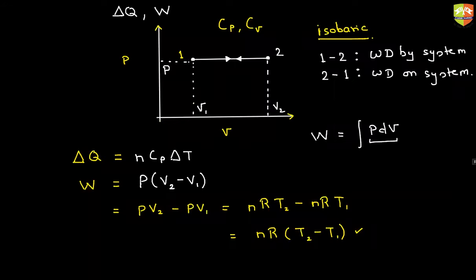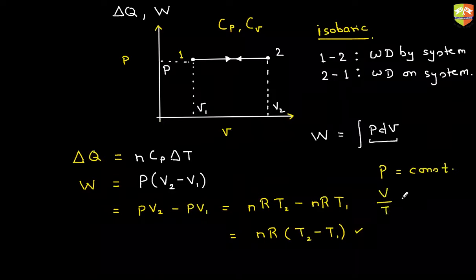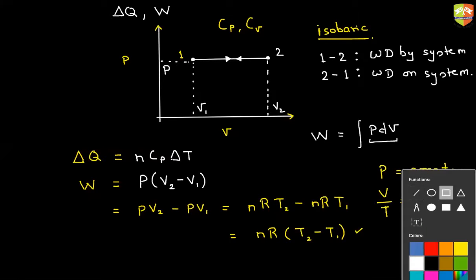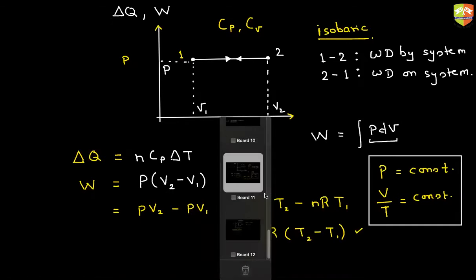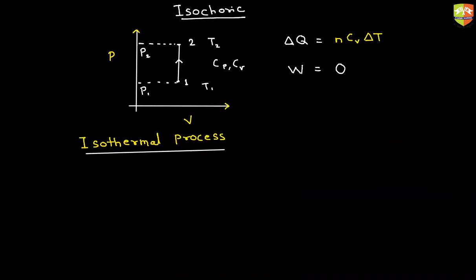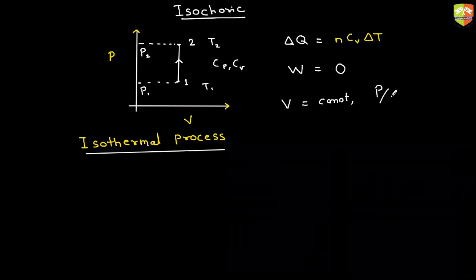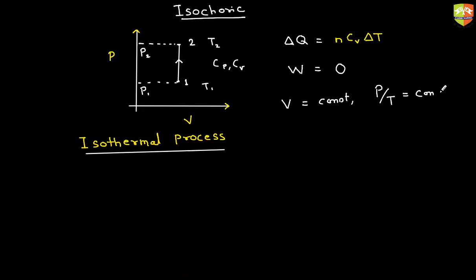For example, for isobaric, you can say the process equation is pressure is constant or volume by temperature is constant. This is the process equation. P constant and V by T is constant at every location. Similarly, for isochoric process, we have volume constant or pressure by temperature is constant.